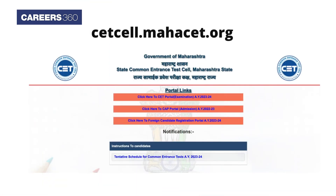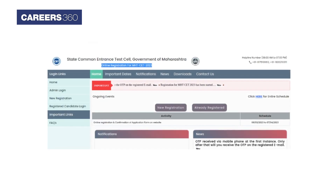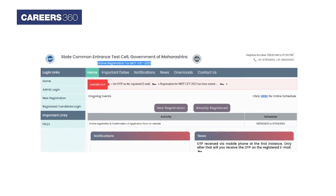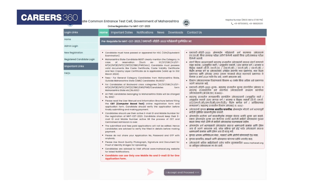Follow the steps mentioned below. Visit the official website setcell.mahaset.org. Click on the SET portal for academic year 2023-24. Now click on the MHT SET 2023 link available under the undergraduate course option. The MHT SET online registration page will appear. Click on the new registration button.